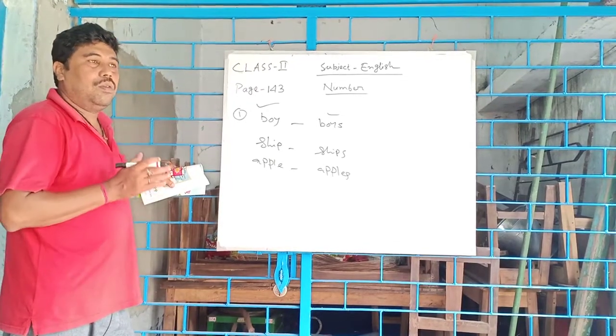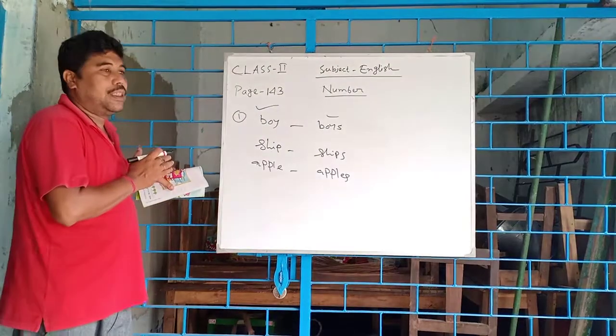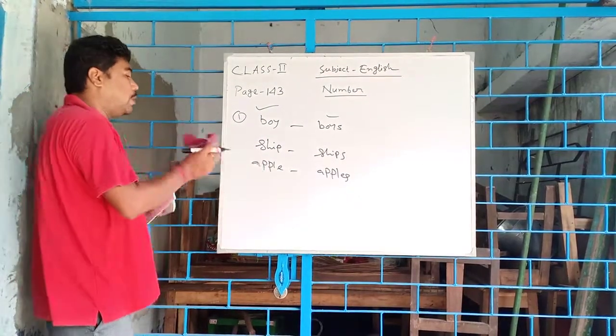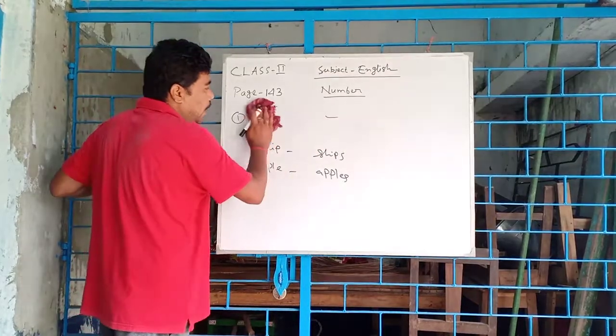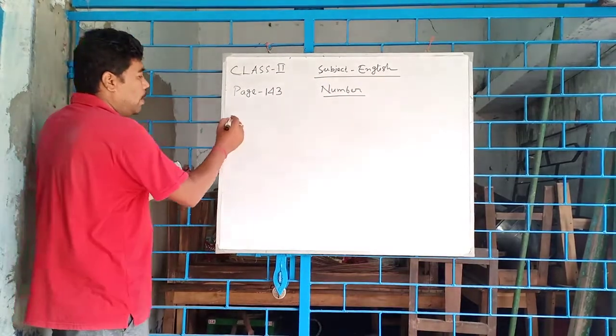This is the first rule we add S or ES to make it singular to plural, but some special rules are also there to follow the change of numbers.